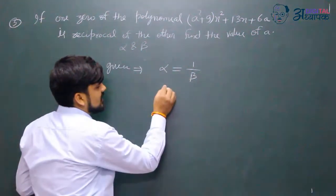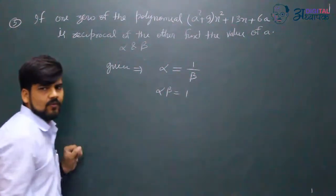If we simplify this, then alpha into beta value is what? One.